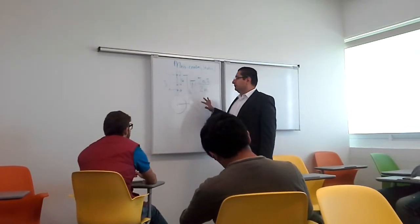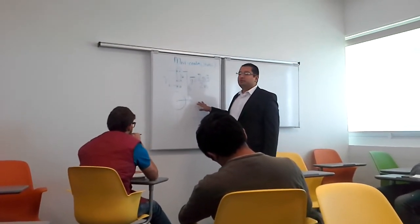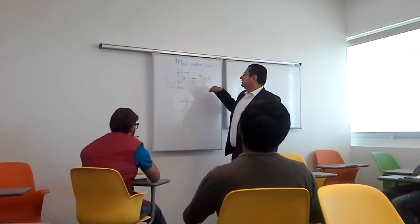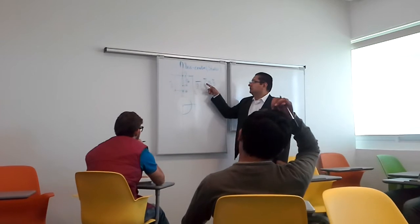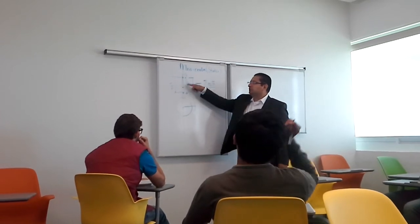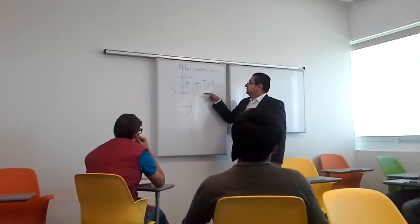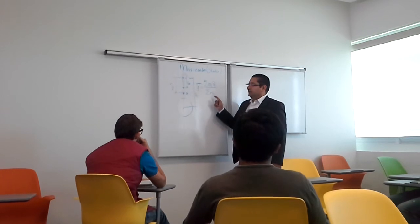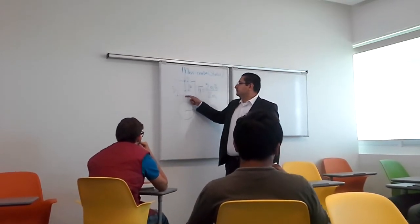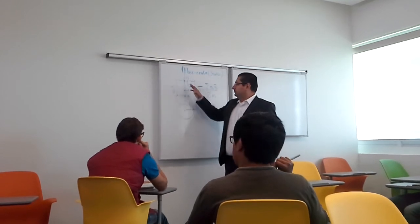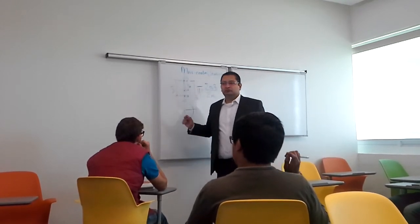You learned in statics how to do this, but if you don't remember, the formula is very simple. You can see it here: the sum of each mass times the distance to a reference point, divided by the sum of masses. That will give you the y-bar that is needed for the mass center of the pendulum.